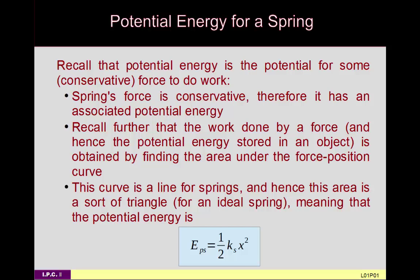If you stretch a spring out, release it, let it compress and re-stretch, the only two points that matter are the initial amount it was stretched and the final amount it's stretched or compressed. So the potential energy function for a spring is a function of the displacement from equilibrium, and the equation is: potential energy equals one half of the spring constant times the displacement squared from equilibrium — U = ½ ks x².